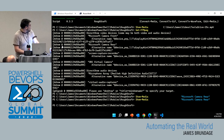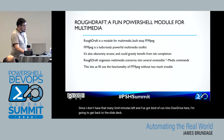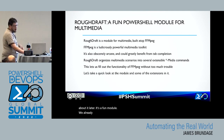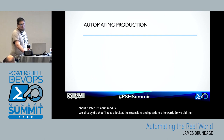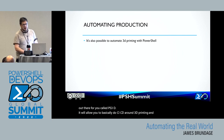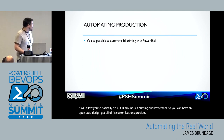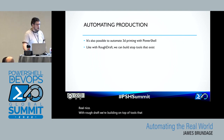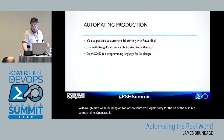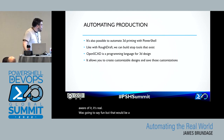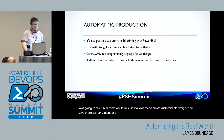Since I don't have that many minutes left, I'm going to get back to the slide deck. I'll cover more of Rough Draft tomorrow. There's a new module out there called PS3D. It will allow you to basically do CI/CD around 3D printing in PowerShell: you can have an OpenSCAD design, get all of its customizations, provide new ones, get out an STL, get out a PNG if you want. OpenSCAD is a programming language for 3D design — it allows you to create customizable designs and save those customizations. And we can now work with that in PowerShell as well.